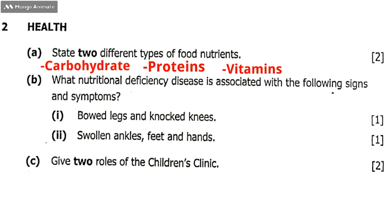We go to question number 2B: what nutritional deficiency disease is associated with the following signs and symptoms? A — bowed legs and knocked knees. So what disease has the signs and symptoms of bowed legs and knocked knees? That is rickets.